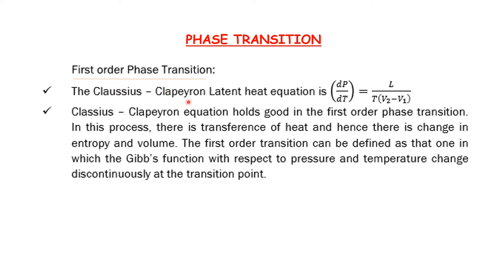The Clausius-Clapeyron latent heat equation states: dP/dT = L divided by T times (V2 minus V1). This is the latent heat equation, and the Clausius-Clapeyron equation holds good in the first order phase transition.